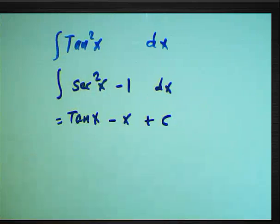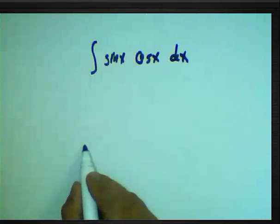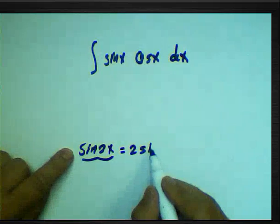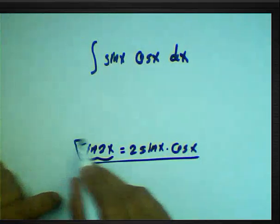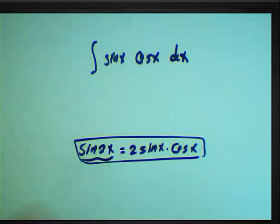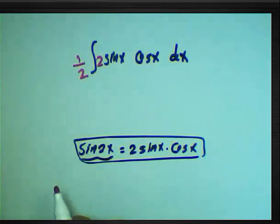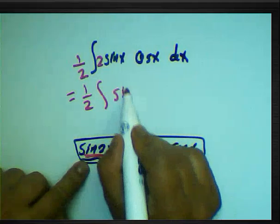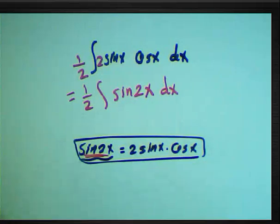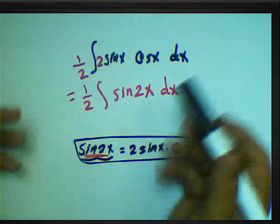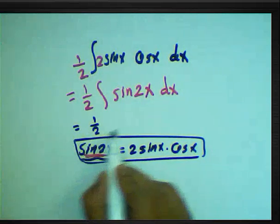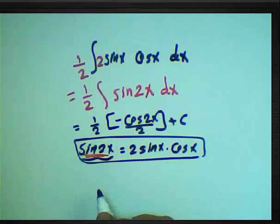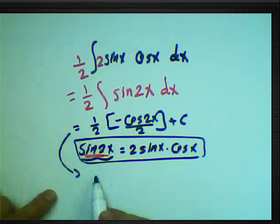What about the integration of sin(x)cos(x) dx? We know the identity sin(2x) equals 2·sin(x)·cos(x). We can multiply both sides by 2 and divide by 2, so the integrand 2·sin(x)·cos(x) becomes sin(2x). The integration of sin(2x) is negative cos(2x) over the derivative of the angle 2x, which is 2. Multiplying one-half by negative cos(2x) divided by 2 gives negative (1/4)cos(2x) plus constant.